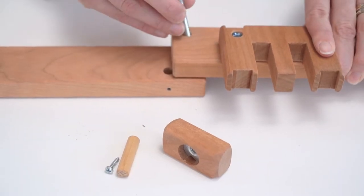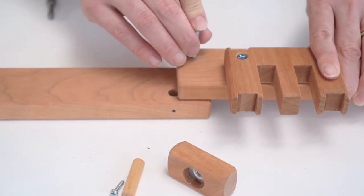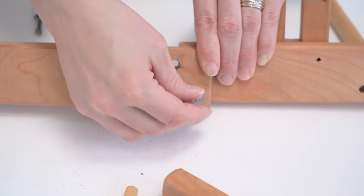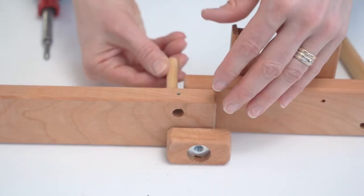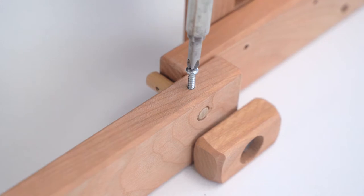Then you'll do the exact same on the back. One bolt, one washer, and one knob. Putting the dowel through this in.